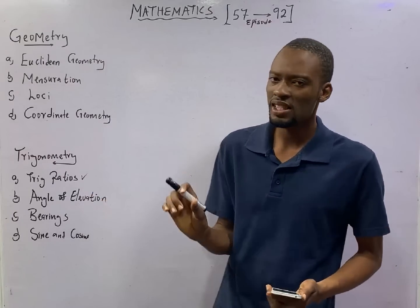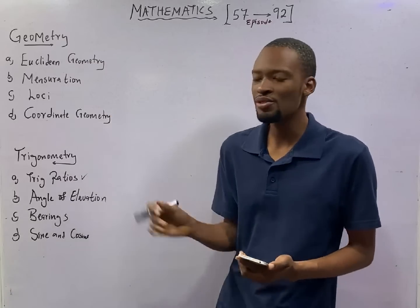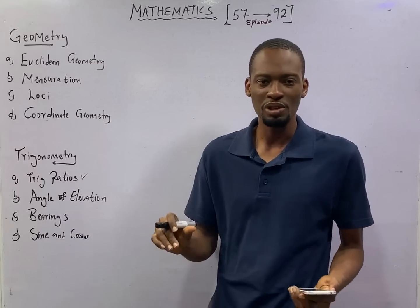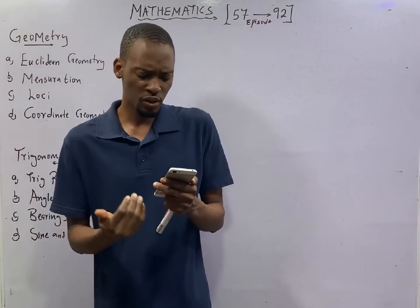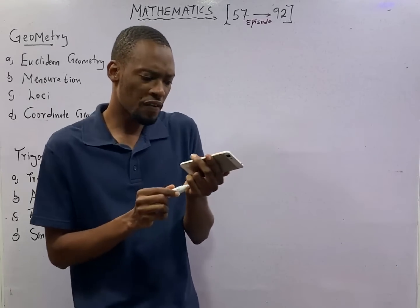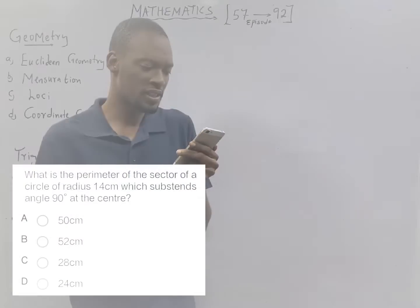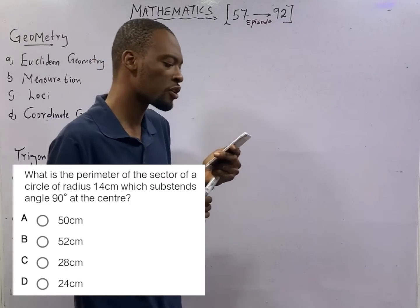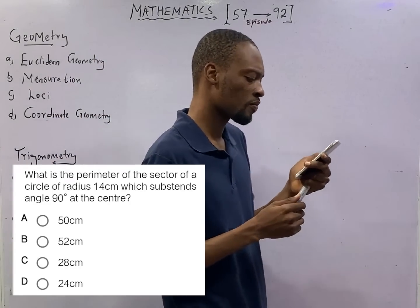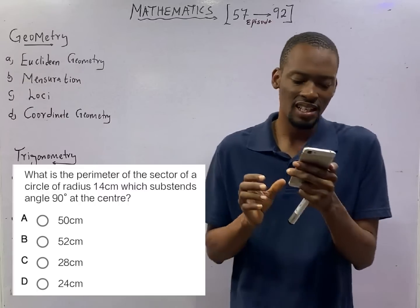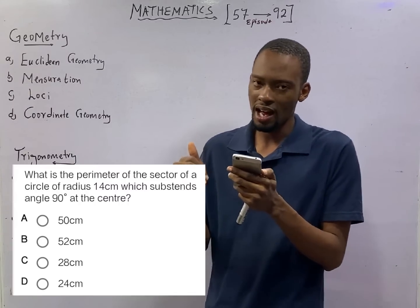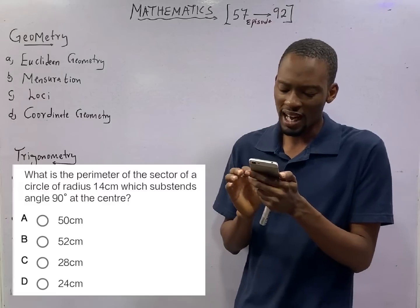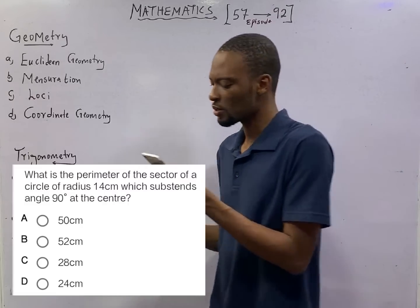Remember we are still dealing with Geometry and Trigonometry. This question says, what is the perimeter of a sector of a circle of radius 14 cm which subtends 90 degrees at the center?